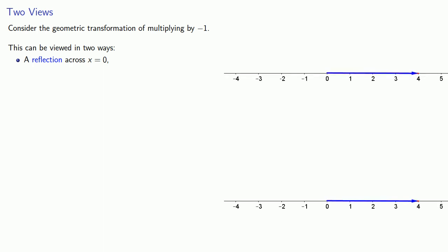Consider the geometric transformation of multiplying by minus 1. We can actually view this in two ways. We can view it as a reflection across x equals 0. But we might also consider this to be a 180 degree rotation around x equals 0.